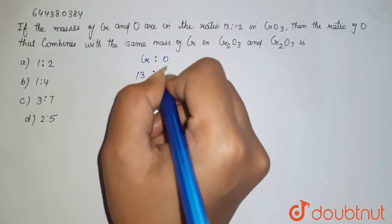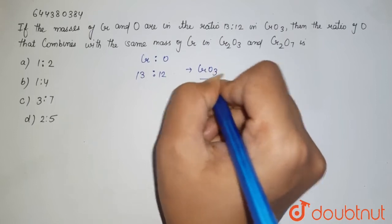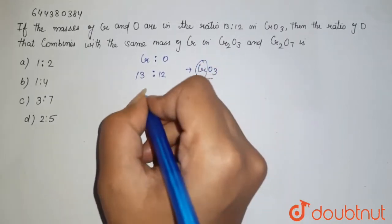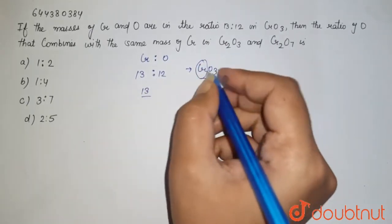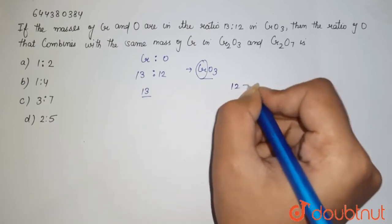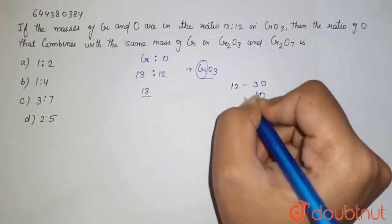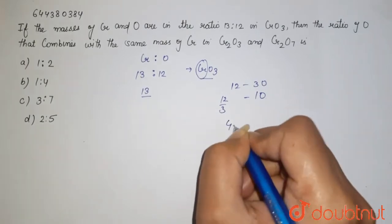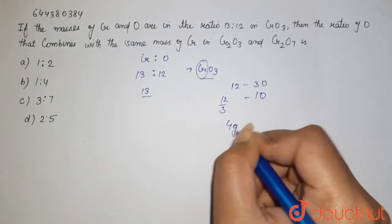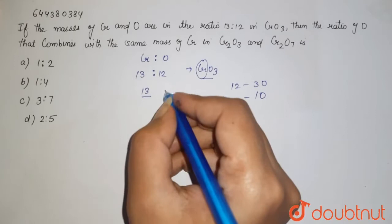CrO3, which means this is one chromium, so it is 13, here it is three oxygen, 12. If 12 is for three oxygen atoms, if we want to find for one oxygen, that is 4 grams for one oxygen. So here these are the masses given.